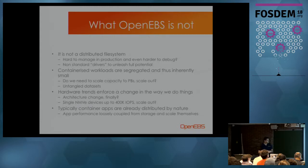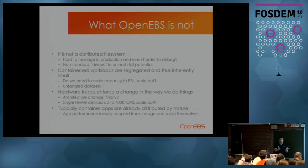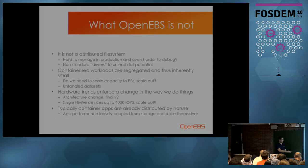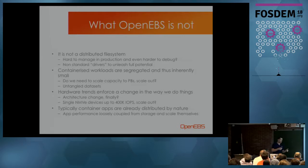To really unleash the full potential of distributed file systems, you need special drivers. You cannot just have your petabyte-scale, multi-gigabyte throughput system and connect with CIFS and expect that data to come out of the pipeline — you need special clients. Containerized workloads are segregated and inherently small. Instead of having one big data-gravity chunk in your data center, you have these small workloads with very small datasets. Something like a MongoDB with 300 gigs — if you keep it that small, it becomes very simple to manage and easy to replicate.